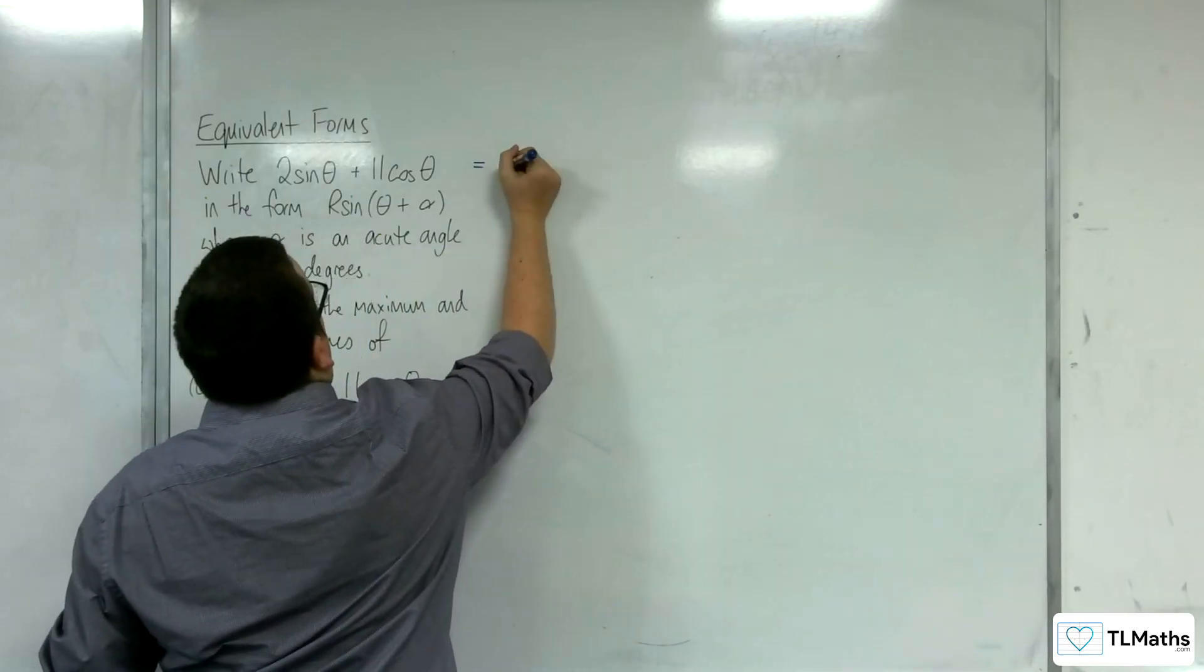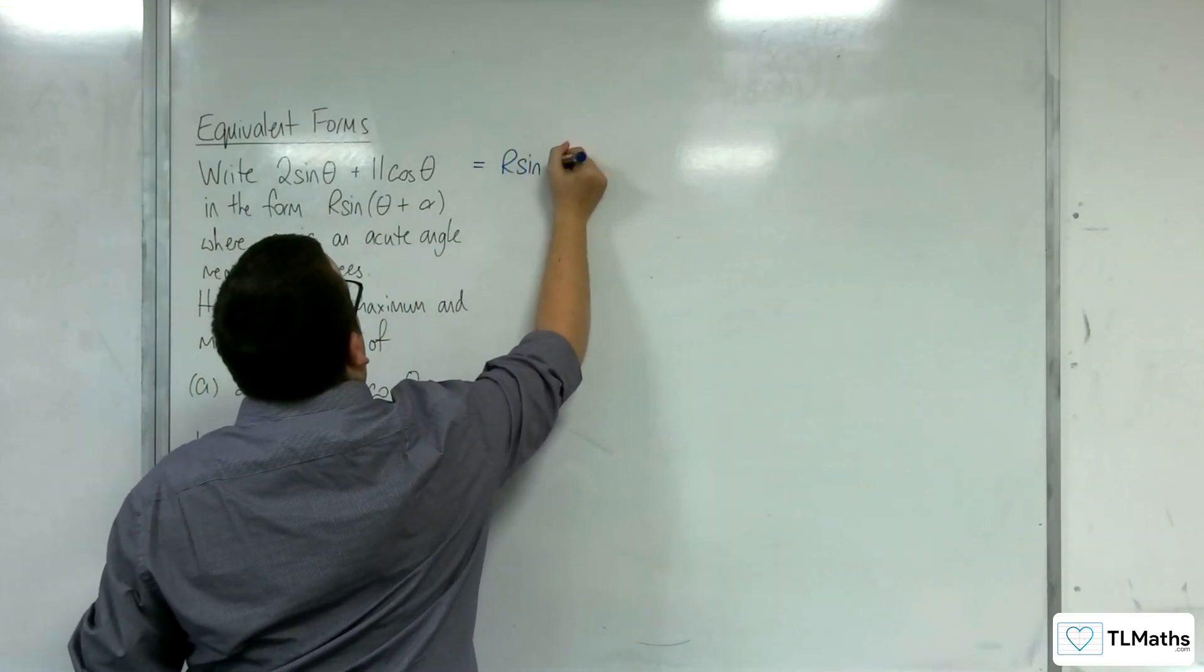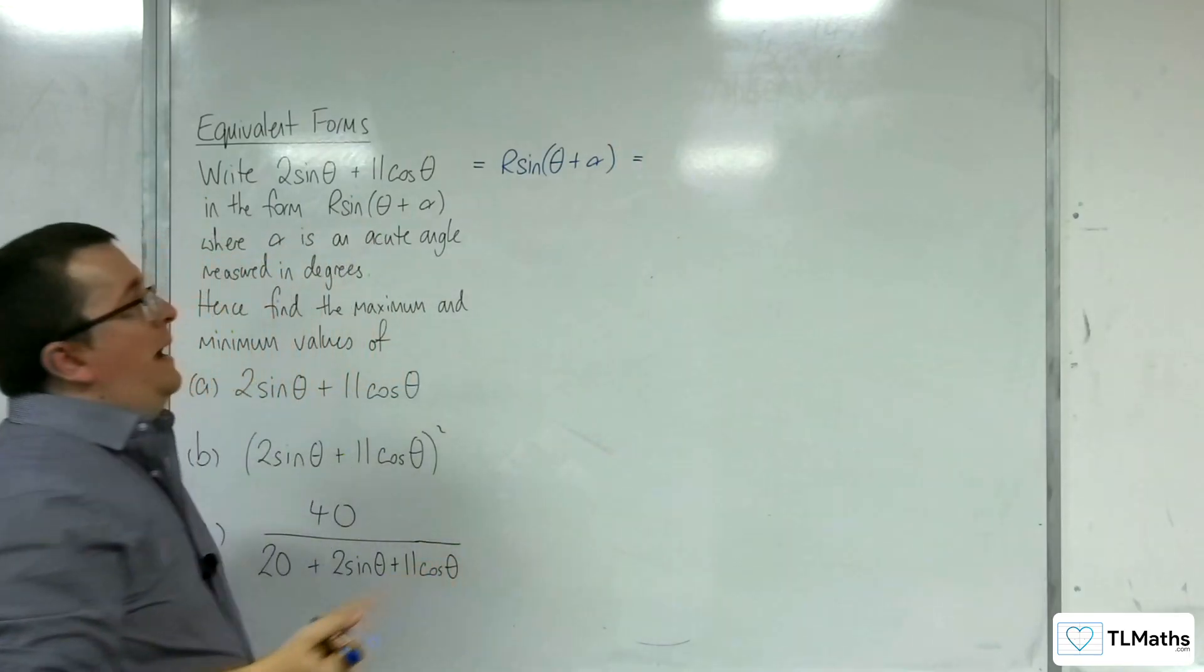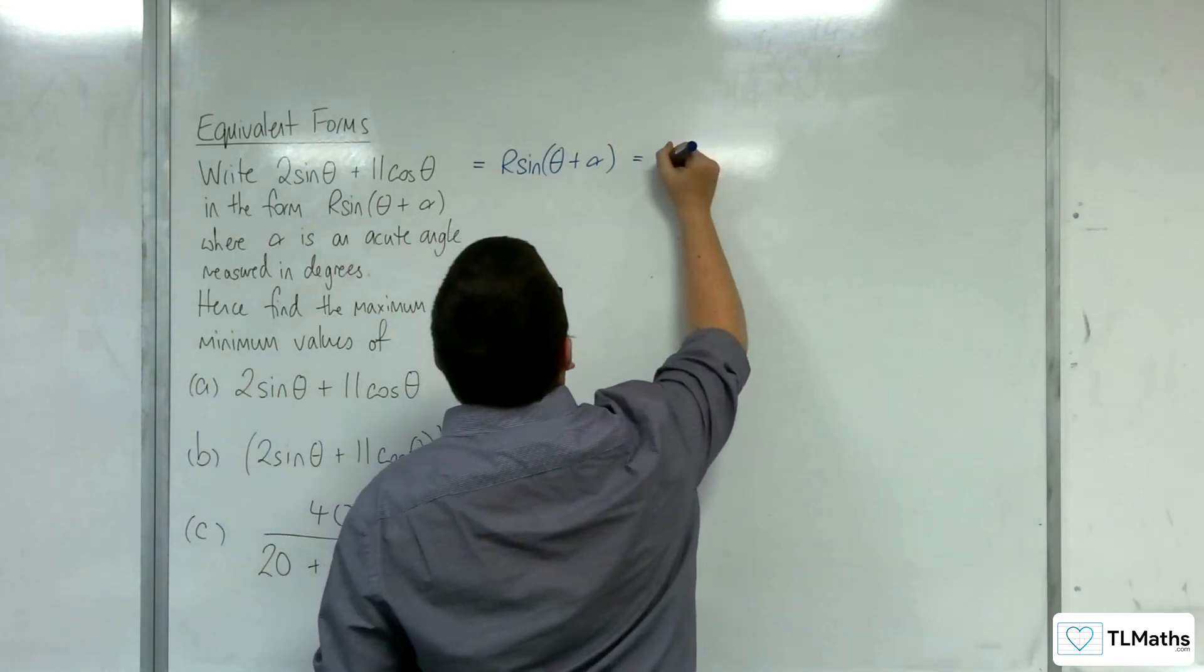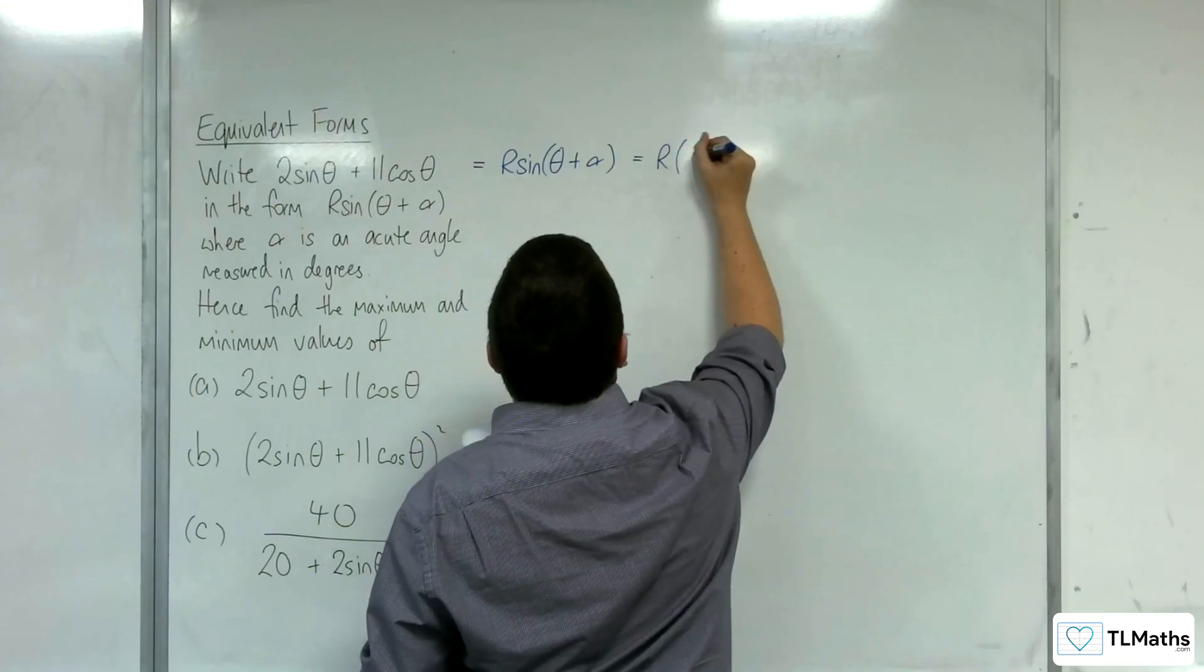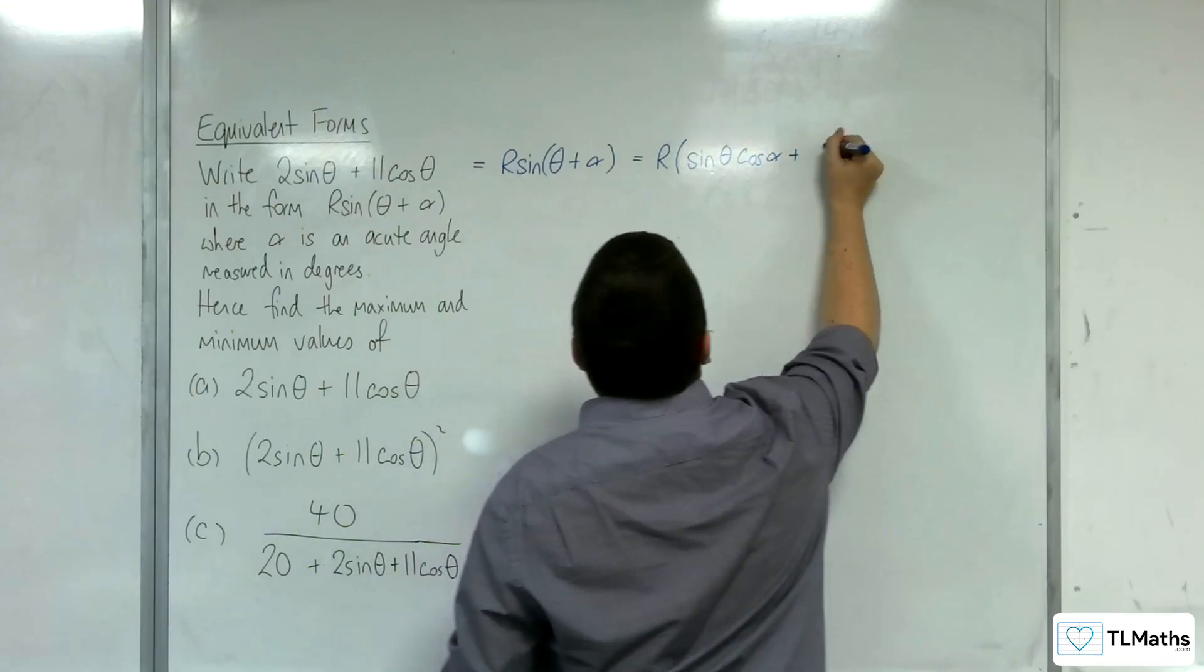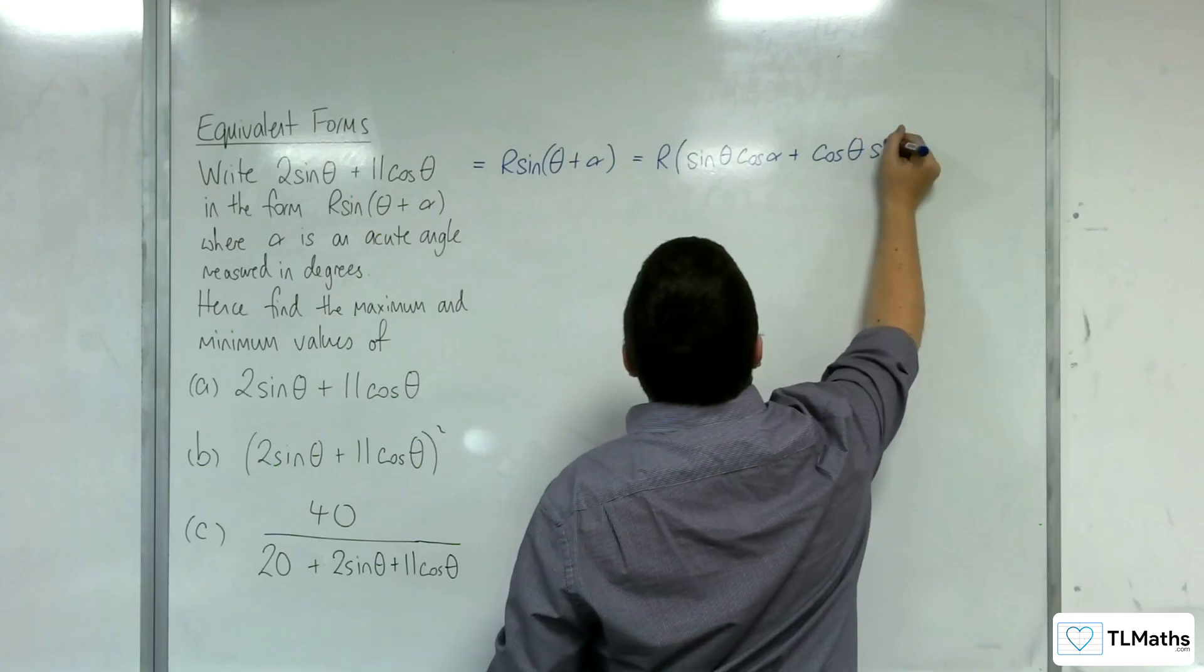So this is equal to R sine theta plus alpha, and we're going to use the compound angle formula to write that as R times sine theta cosine alpha plus cosine theta sine alpha.